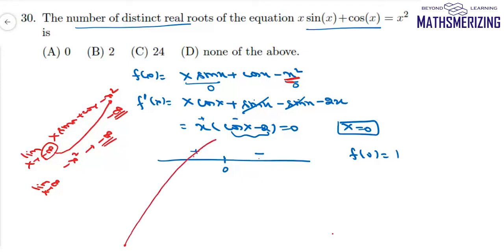The function starts from negative infinity, increases to a maximum value of 1 at x = 0, then decreases back to negative infinity.